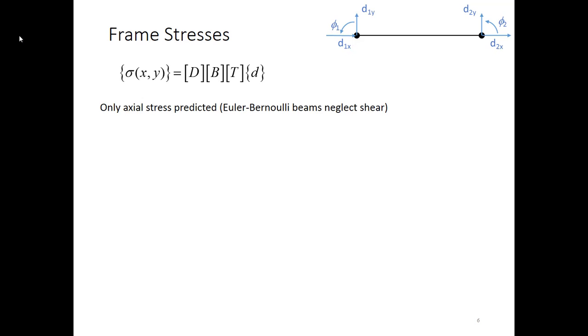Now remember this stress vector is going to simplify to sigma x because only axial stresses are predicted for our strains. And that's going to be in the local coordinate system. Stresses are always reported or developed initially in the local coordinate system.